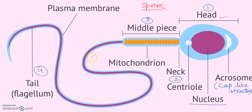The neck region is a constricted region which is just below the head. You can see here this is the neck region just below the head. It has a pair of centrioles, which are cell organelles involved in cell division.